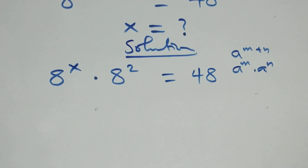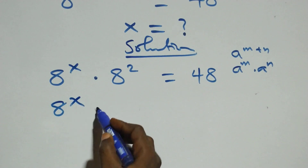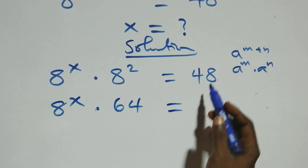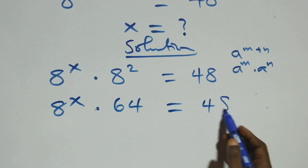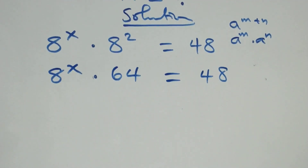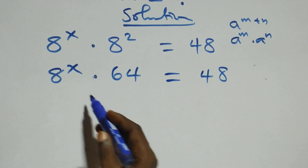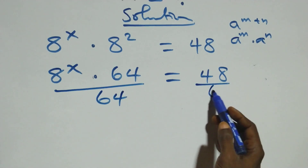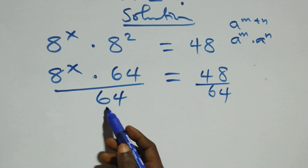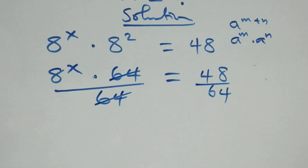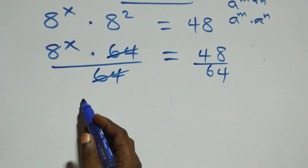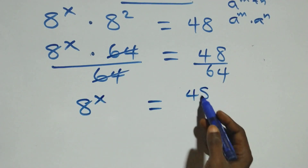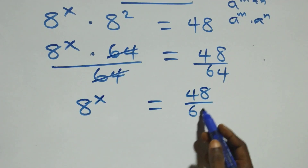The next step is the same thing as a raised to power x over h squared, which is dense h at 64, then minus equals 48 on this side. The next step: divide this over 64, also divide this over 64, which implies 64 cancels each other. We have 8 raised to power x left, which is equal to 48 over 64.